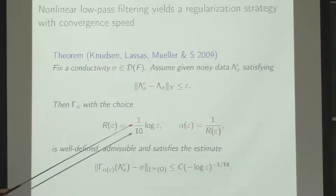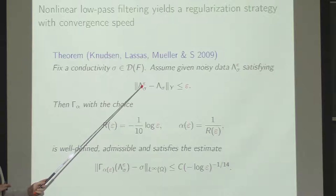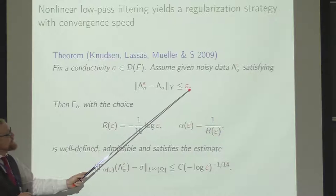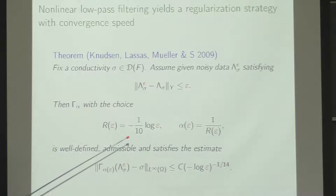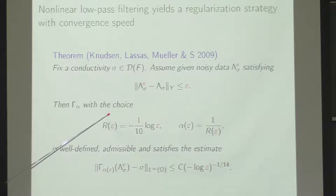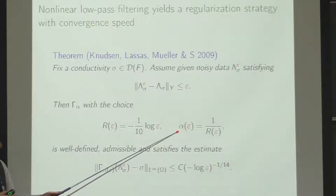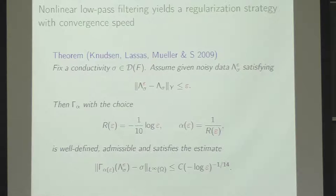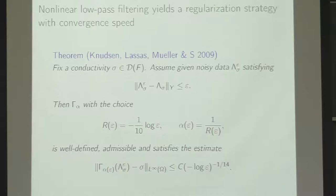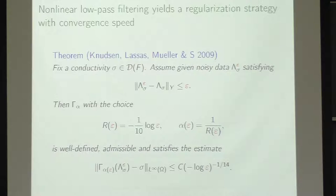This is the framework in which we prove regularization. Given noisy data — not necessarily any DN map, just an operator in the data space — we know it is at most epsilon away from the exact data. We then choose a truncation radius in the nonlinear Fourier space explicitly with a given formula, so that when epsilon goes to zero, alpha also goes to zero. We not only prove that the worst-case error goes to zero in the limit, we also give an explicit bound — not a very tight bound, but it is more than just the limit.